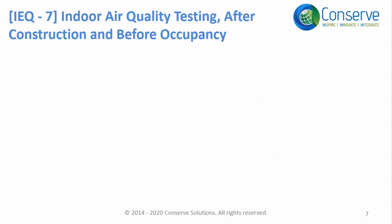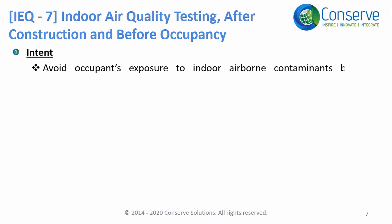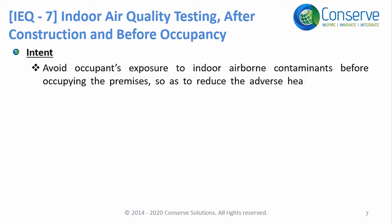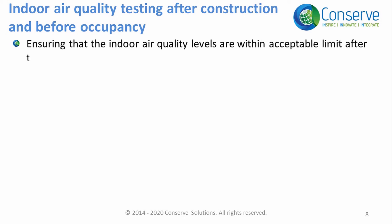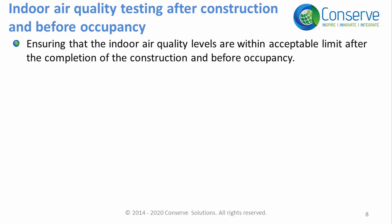The intent of Credit 7 is to avoid occupants' exposure to indoor airborne contaminants before occupying the premises, in order to reduce adverse health impacts on building occupants. Indoor air quality testing after construction and before occupancy is about ensuring that indoor air quality levels are within acceptable limits after the completion of construction and before occupancy.